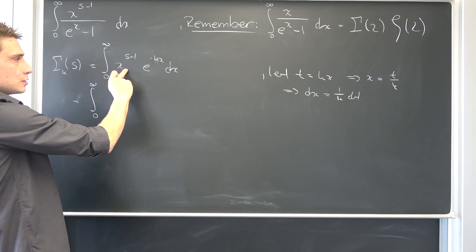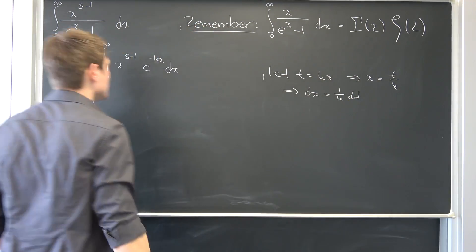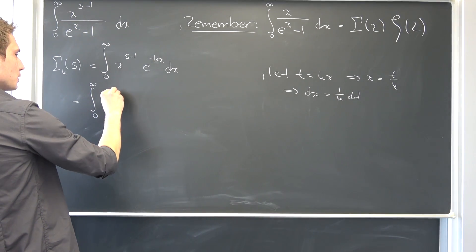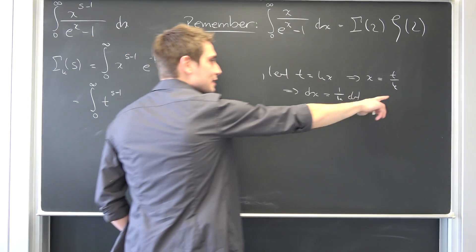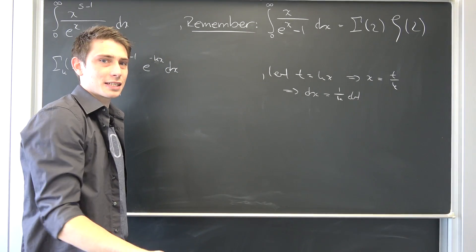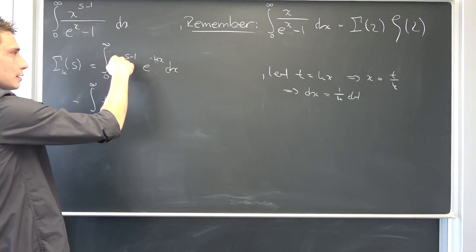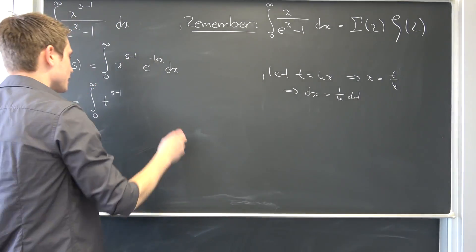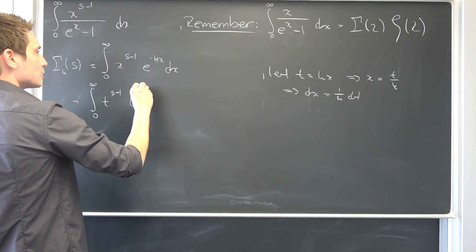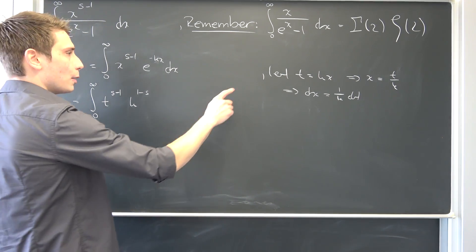Then we have x to the s minus 1 power. But x is nothing but this right here. So we are going to get t to the s minus 1 power. Then this is 1 over k. That's k to the negative 1 power. So this exponent is just going to turn signs. So this is nothing but k to the 1 minus s power.